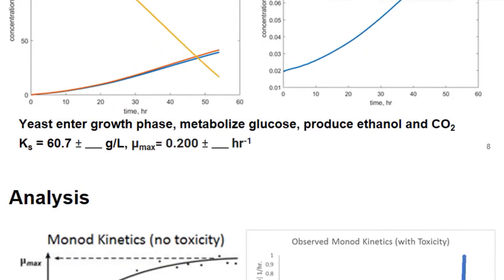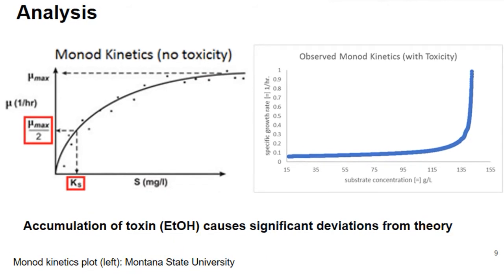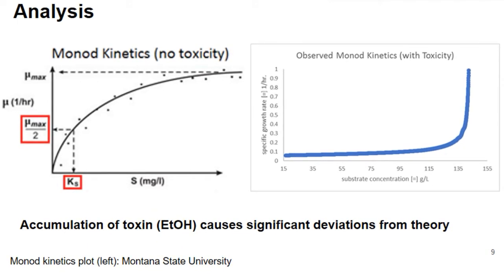A key analysis to take away from the data we observed is the difference in the theory when we take into account this toxicity level. In traditional Monod kinetics, when you have substrate composition or concentration versus growth rate, the more substrate you give the cells access to, the more these cells will be able to divide more quickly. Typically we would have expected a much lower growth rate.